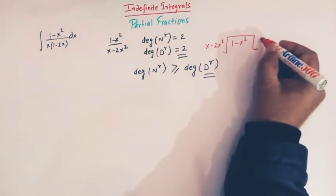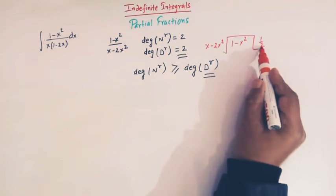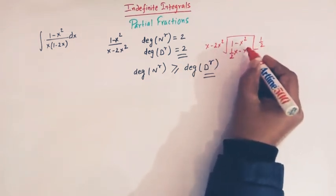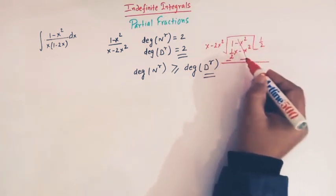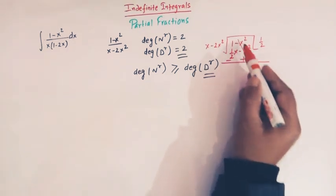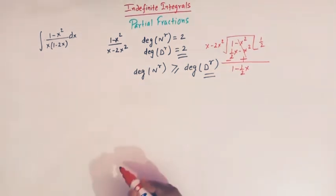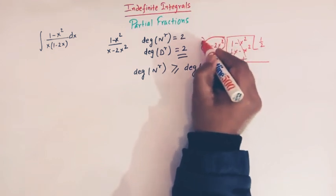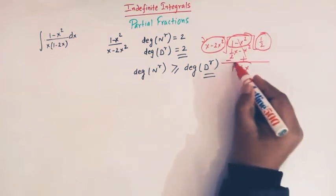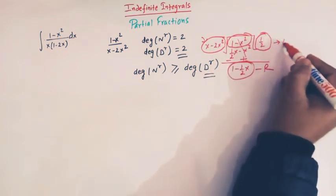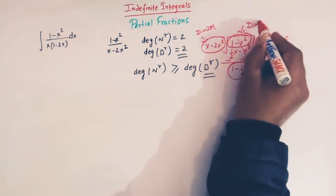Here the quotient will be one-half, because when we multiply (x minus 2x squared) by one-half, we get (one-half x minus x squared). We subtract, and these two terms get cancelled, leaving us with (1 minus one-half x). So this is our dividend, this is our divisor, this is the quotient, and this is the remainder.